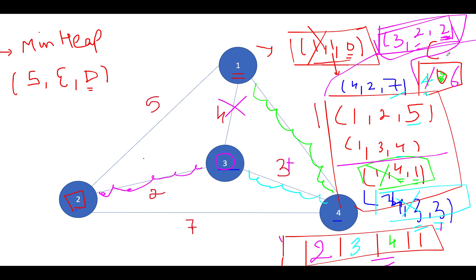The cost comes out to be six, which matches the expected answer. If you've understood this, you've understood the entire logic of minimum spanning tree. The time complexity of this approach is O(n² log n), which I'll explain further in the coding section.